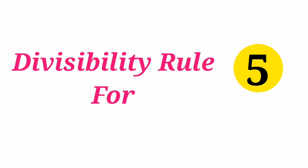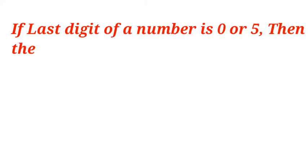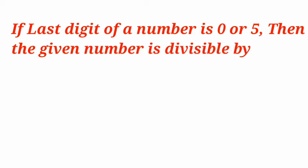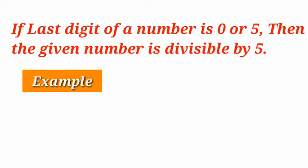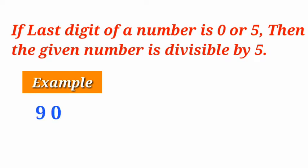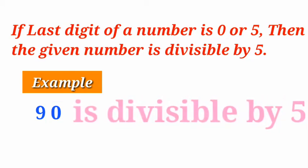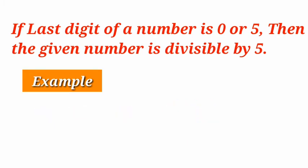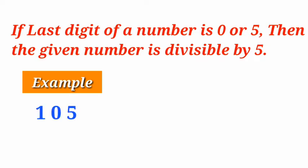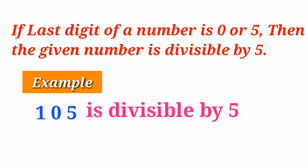Divisibility rule for 5. If the last digit of a number is 0 or 5, then the given number is divisible by 5. For example, 90 — the last digit is 0, so this number is divisible by 5. Let us see another example: 105. The last digit is 5, so according to the divisibility rule of 5, this number is also divisible by 5.